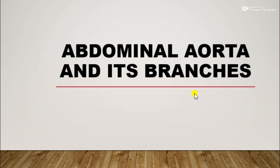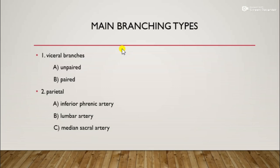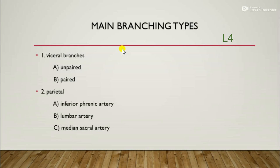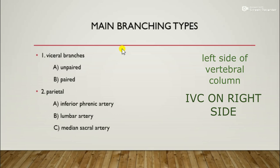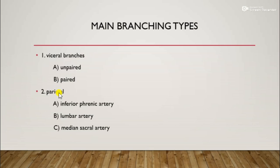The abdominal aorta begins its course from the aortic hiatus of the diaphragm and terminates with the aortic bifurcation at L4. The abdominal aorta descends along the left side of the vertebral column, while the inferior vena cava resides on the right. The abdominal aorta gives rise to visceral branches and parietal branches.